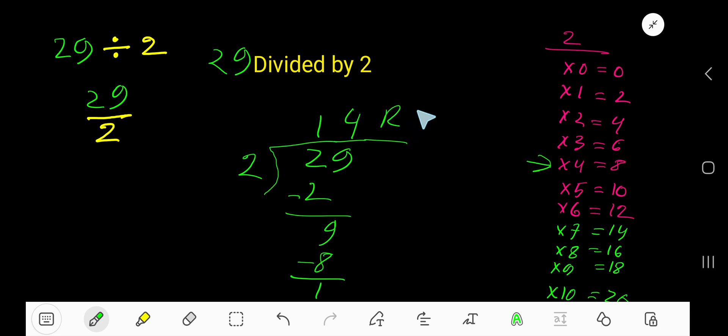So your answer is 14, remainder 1. But if you want to convert this answer into decimal, just convert the dividend into a decimal number.